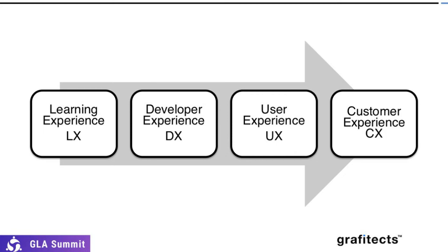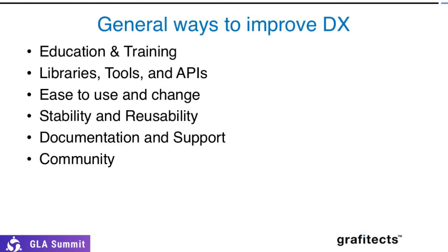Ease of use and the ability to change things easily is important. Documentation and support is very, very important — you can find a lot of documentation on the NI website. In the beginning it can be overwhelming, but attending events like this helps you navigate it. There are three technical ways of improving developer experience: recommended guidelines, standards, and design patterns — the third being what we'll cover here. These three are general ways to develop your applications and improve your developer experience.